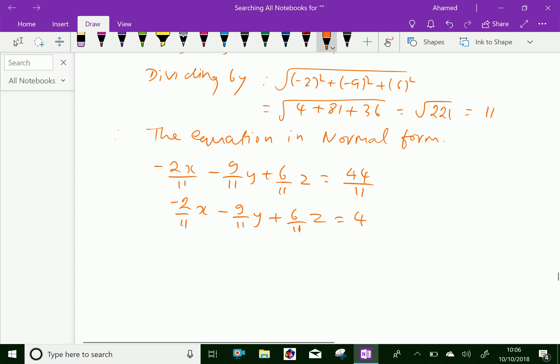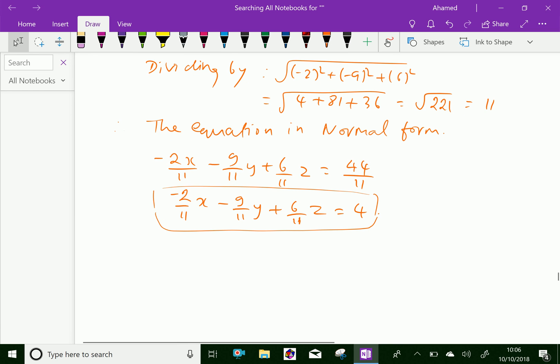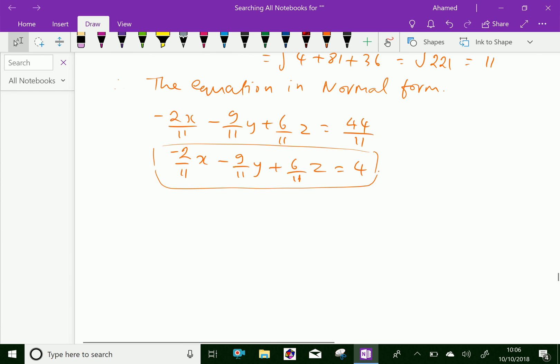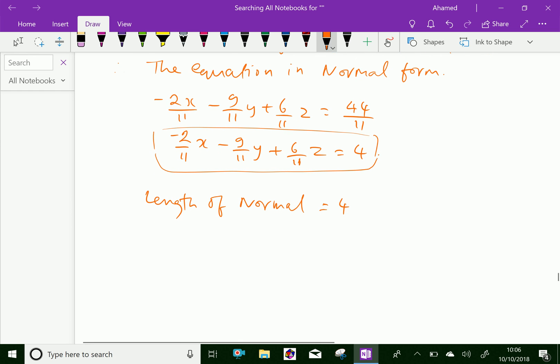Now let us find the angles. The length of the normal here is 4 units. Therefore the required angles are: